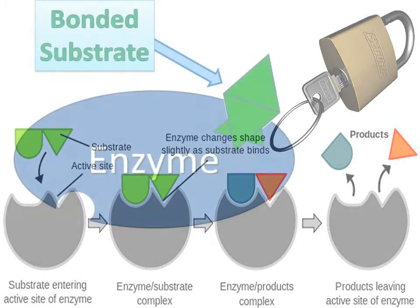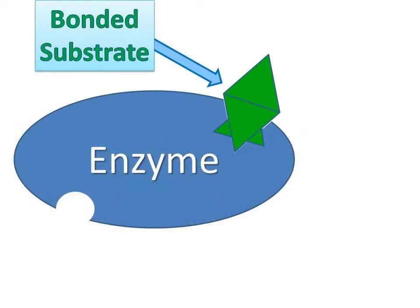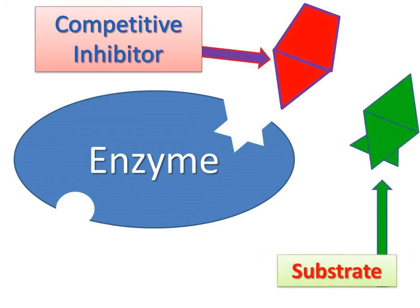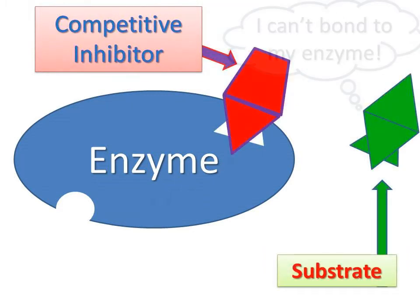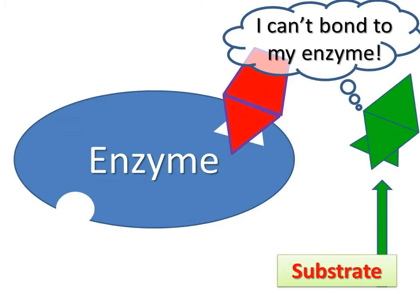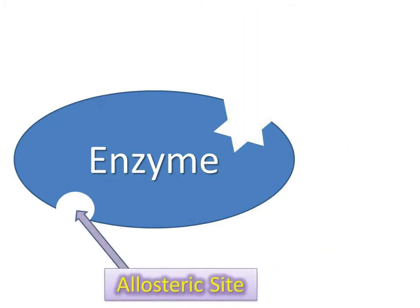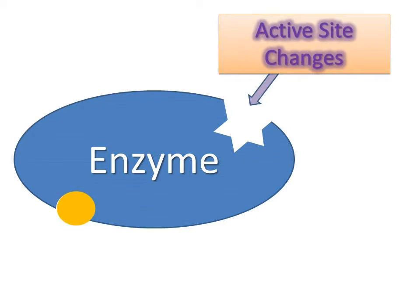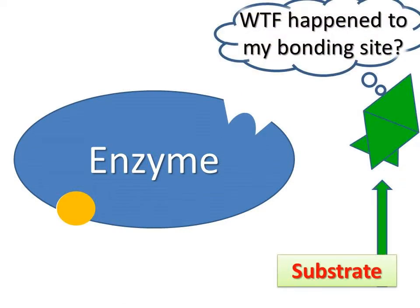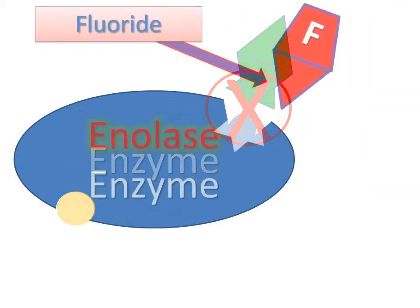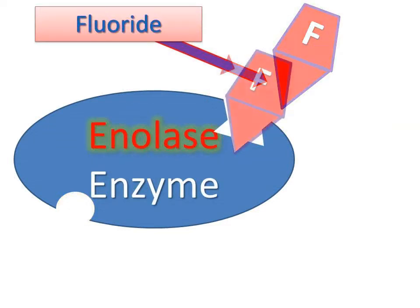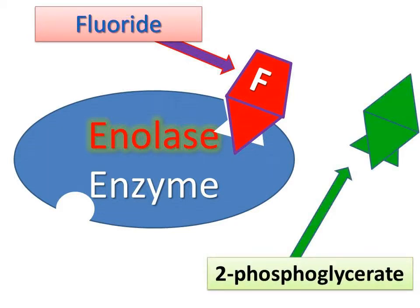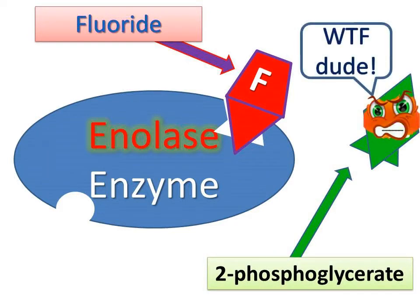There are two ways that an enzyme can be prevented from bonding to the corresponding substrate. Competitive inhibition is when something else is already attached to the active site, preventing the substrate from bonding. There's another site called the allosteric site, and when something attaches there, it causes the active site to change shape, which also prevents the substrate from bonding. Fluoride bonds very well to the active site on the enolase enzyme, preventing the substrate 2-phosphoglycerate from bonding. This prevents fermentation and lactic acid production, which prevents cavities.